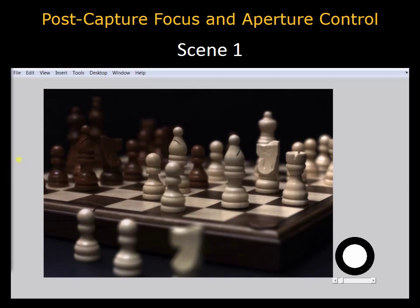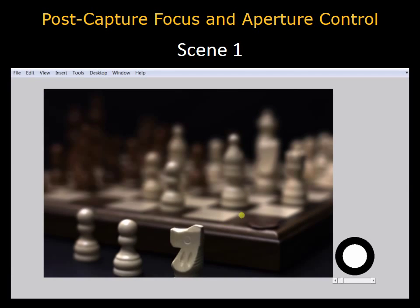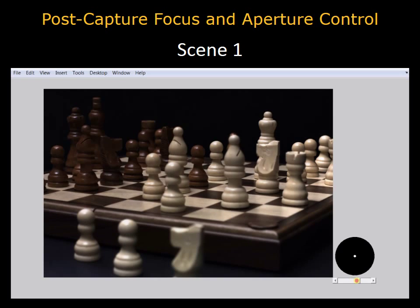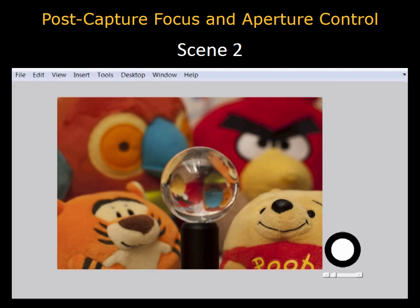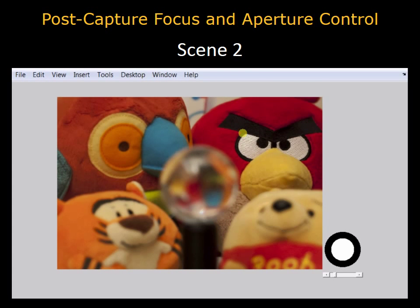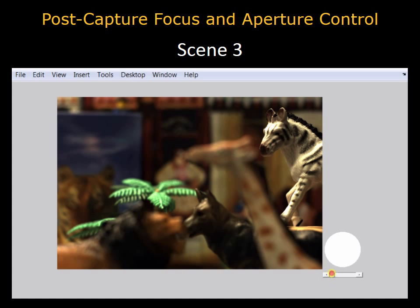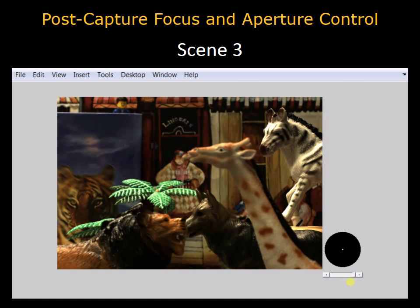An interactive GUI allows for exploration of the reconstructed epsilon photography stack for different scenes. Again, only 16 input images of each scene were used. The user can choose the plane of focus by directly clicking on the point of interest. The size of the aperture may be varied using a slider.